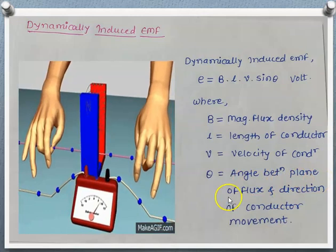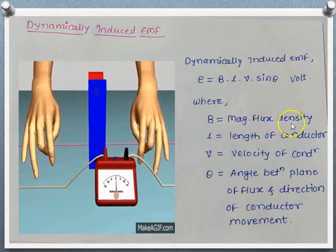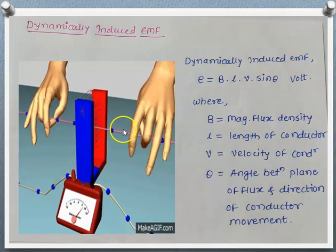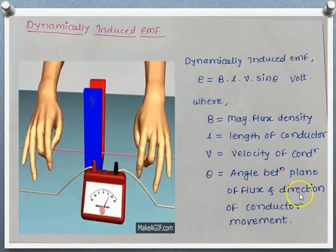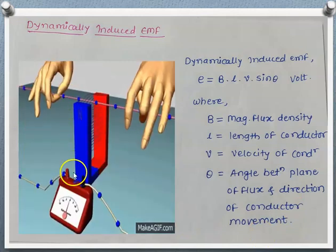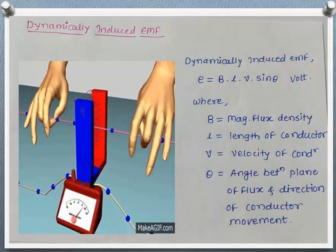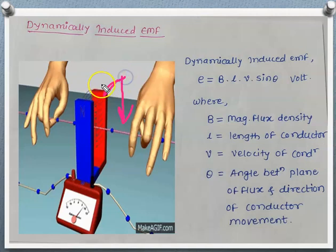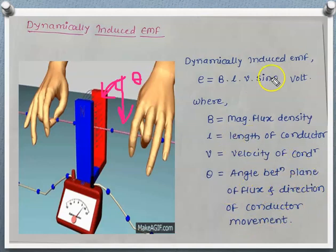Theta (θ) is the angle between the plane of flux and the direction of conductor movement. The direction of conductor movement here is from top to bottom, and the plane of flux is as shown in the figure. The angle between these two is theta. The magnitude of the induced EMF also varies depending on this angle theta between the plane of flux and the direction of conductor motion.